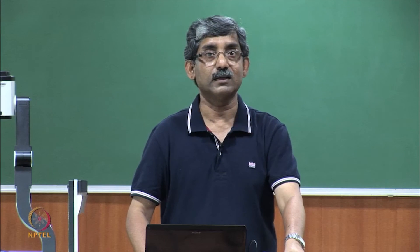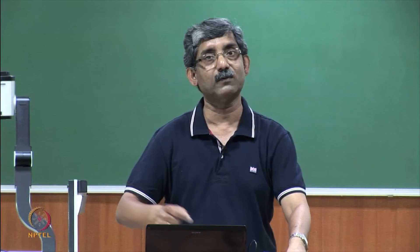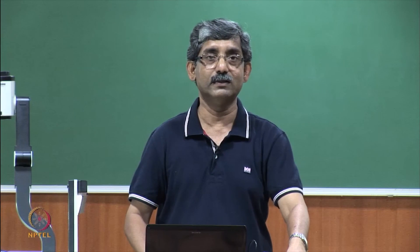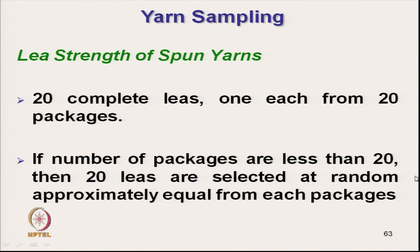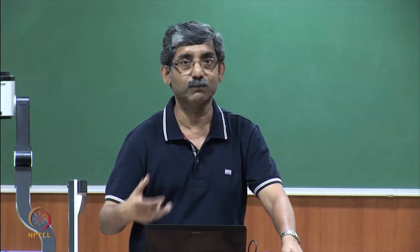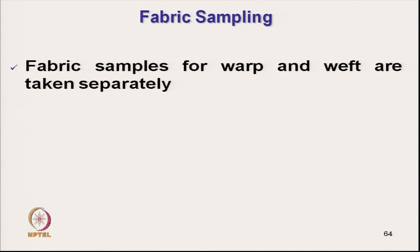For lea strength of spun yarn, a minimum of 20 complete lees are taken, 1 each from 20 packages. One lee from each package is enough because a lee covers a longer length — typically 120 yards. If the number of packages is less than 20, then 20 lees are selected at random approximately equal from each package; for example, if we have 10 packages, we take 2 lees per package, ultimately totalling 20 lees.